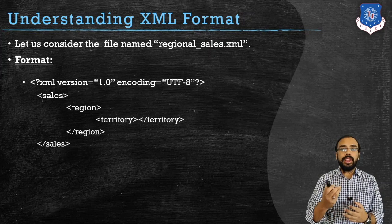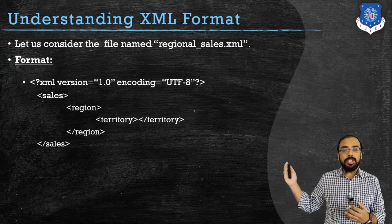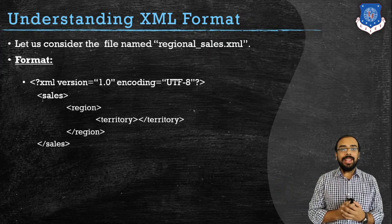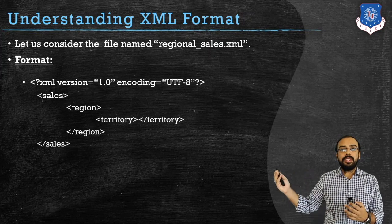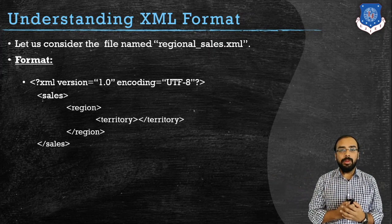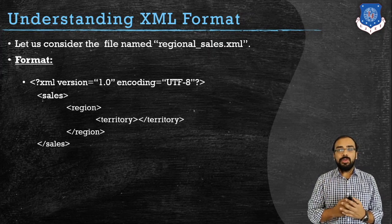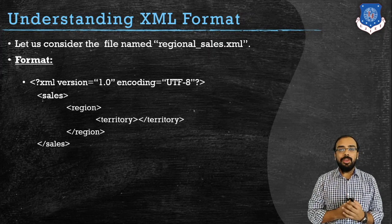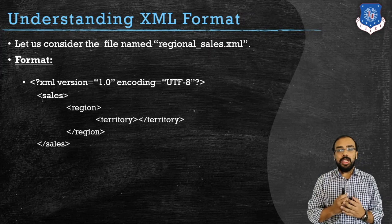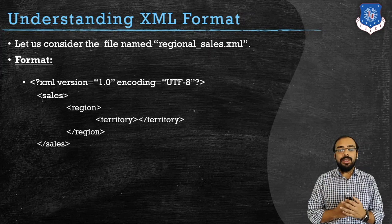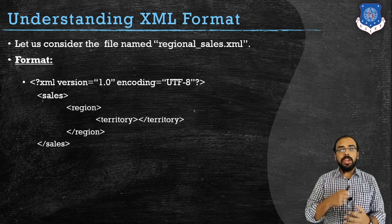Inside the XML we create a main tag named 'cells', which will act as the root tag for the XML file. If I want to create another tag inside 'cells', we can easily do so. For example, a sub-tag named 'region', and inside region another sub-tag named 'territory'. This XML file indicates how many sales have been done in a particular region.